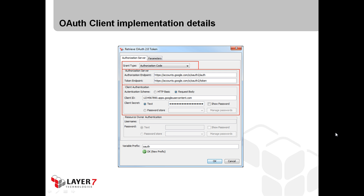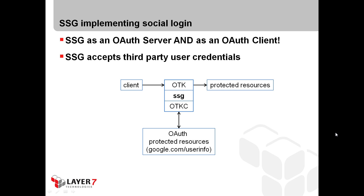In order to implement social login, the gateway can use both features it provides. It can act as an OAuth server using the OAuth Toolkit and as an OAuth client implemented as the OTKC — the OAuth Toolkit Client. In this scenario, a client wants to access protected resources that are protected by the gateway, but the user may want to use the social login feature. So the gateway has to act in both roles at the same time, using the OTK and the OTKC to access protected resources itself.